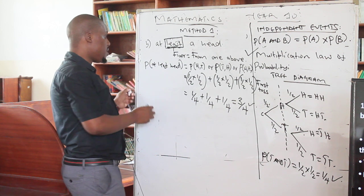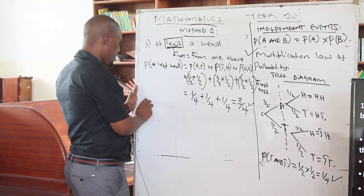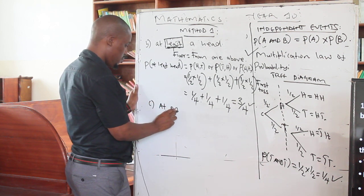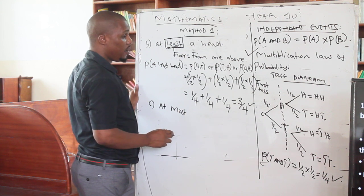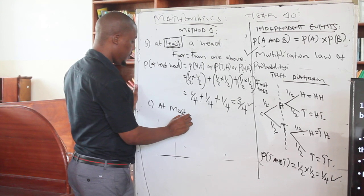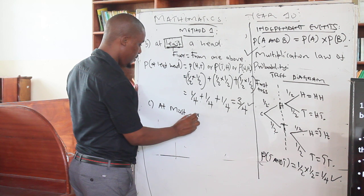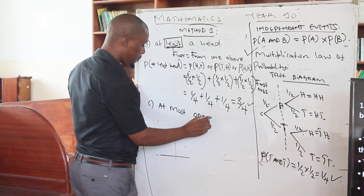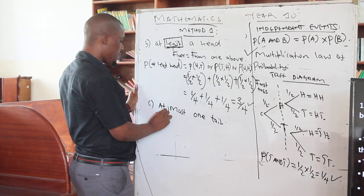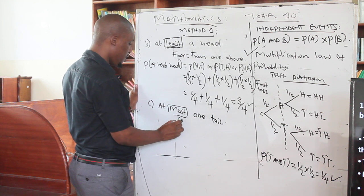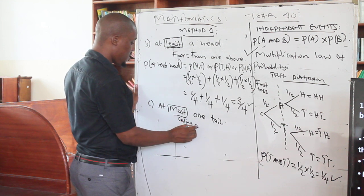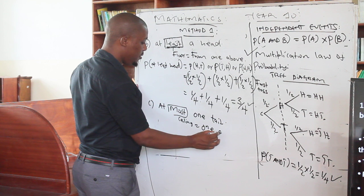Another keyword is 'at most.' The question: what is the probability of getting at most one tail? When you say 'at most,' that is the ceiling — it means one and below. So 'at most one tail' is going to be one and below.